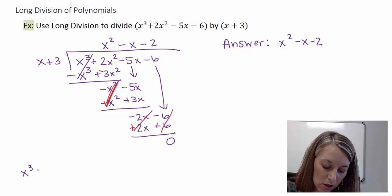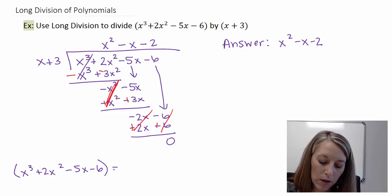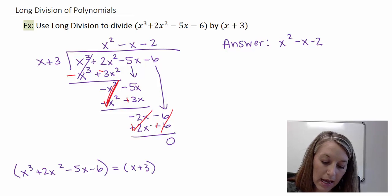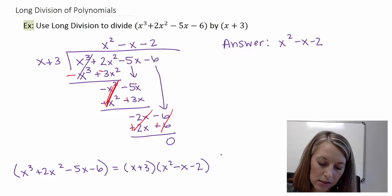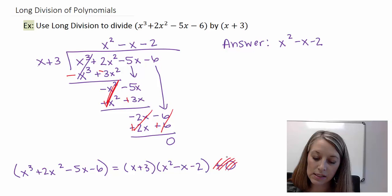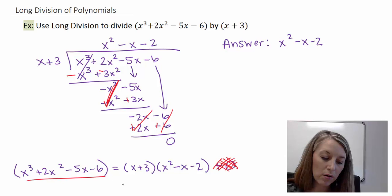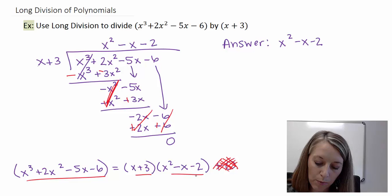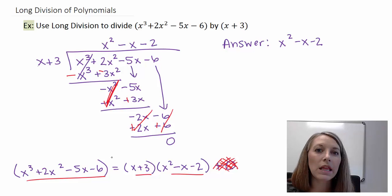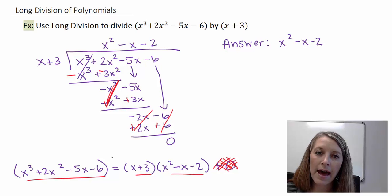We take the first polynomial we started with — x cubed plus 2x squared minus 5x minus 6 — and check that it equals our divisor x plus 3, times our quotient x squared minus x minus 2, plus our remainder. The remainder is 0, so we really should just leave that part off. So our polynomial equals our divisor times our quotient. This is something we're going to use to our advantage, but I'll hold off for now since we're just focusing on the actual division.